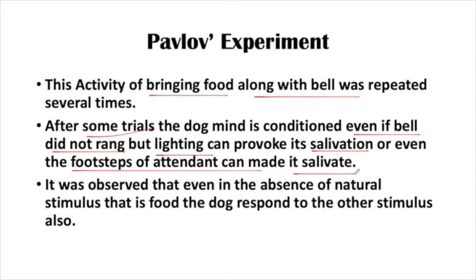The dog's mind had been conditioned — it started to get a lot of stimuli and produce responses. It was observed that even in the absence of the natural stimulus, which was food, the dog would respond to other stimuli. Even in the absence of the natural stimulus, the dog responded to artificial stimuli. This was the experiment of Pavlov, which Pavlov had performed on the dog.